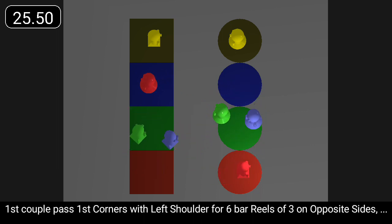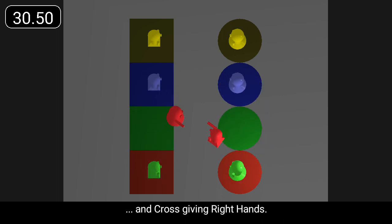First couple pass first corners with left shoulder for six-bar reels of three on opposite sides, and cross giving right hands.